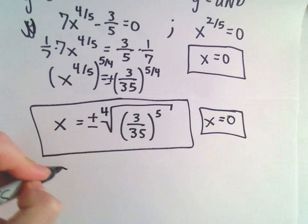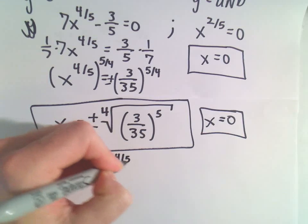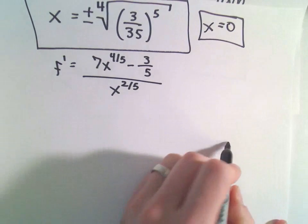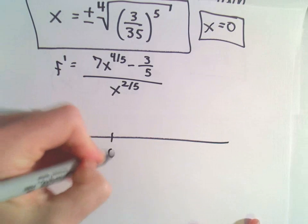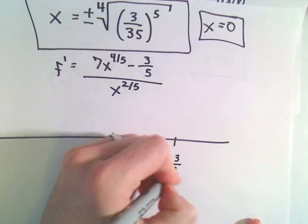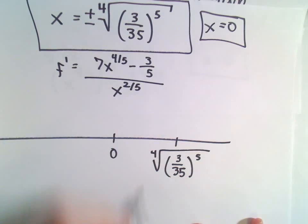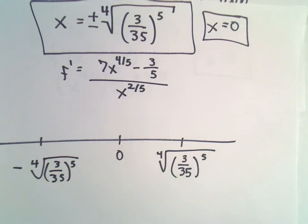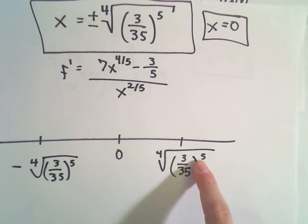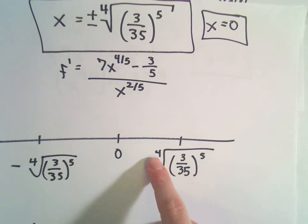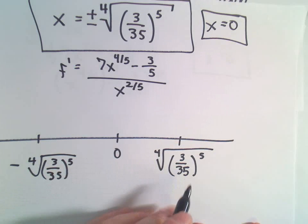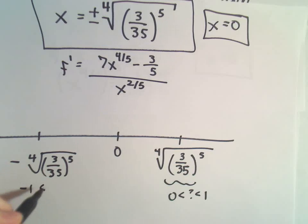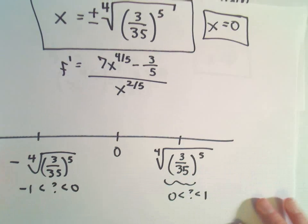I'm going to make a sign chart to think about increasing and decreasing. Our derivative is 7x to the 4/5 minus 3/5, all over x to the 2/5. Our critical points are 0, plus the fourth root of (3/35)^5, and minus the fourth root of (3/35)^5. Since 3/35 raised to the 5th is really close to 0 and its fourth root is still close to 0, both values fall between -1 and 0, and 0 and 1 respectively.